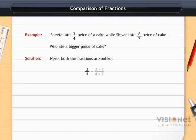3 by 4 is equal to 3 into 7 by 4 into 7, which equals 21 by 28. 6 by 7 is equal to 6 into 4 by 7 into 4, which equals 24 by 28. Clearly, 21 is less than 24.